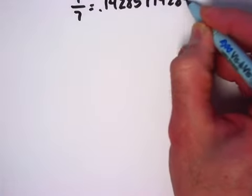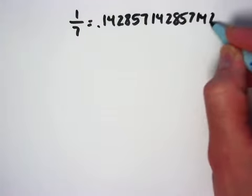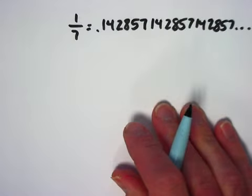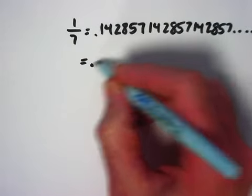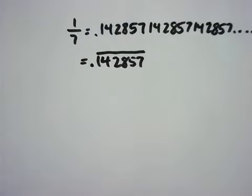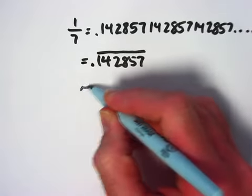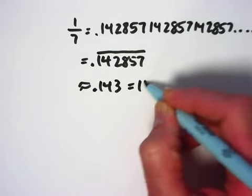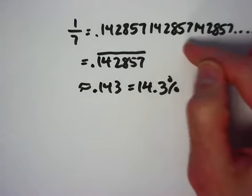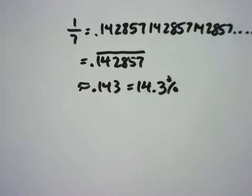After that point, they repeat: 142857, 142857, and that pattern keeps going forever and ever. You can check that with long division. I would encourage you to try that. You'll see that pattern continuing forever. With the bar notation, we'd write that as 0.142857 with a bar over that entire part there. It's another common fraction. You probably don't have to remember the whole thing, but it would be good to remember. I typically try to remember that one-seventh is about 0.143, or as a percentage, 14.3%. But in exact form, it's an infinite decimal with a repeating pattern.